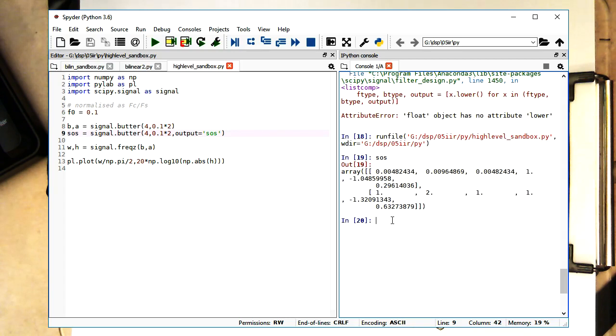So therefore with these coefficients here, we can directly pop them into a second order IIR filter. One of them I presented already before. And with that, we have the Butterworth filter.